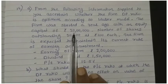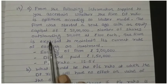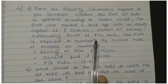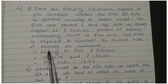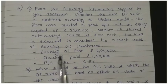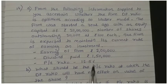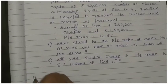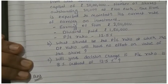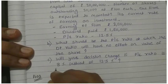From the following information supplied to you, ascertain whether the firm D/P ratio is optimal according to Walter model. You need to determine whether the firm D/P ratio is optimal or not. The firm was started a year ago with an equity capital of 20 lakhs, number of shares outstanding 20,000 at Rs. 100 each. The firm is expected to maintain its current rate of earning on investment. Earning of the firm is given 2 lakh and dividend paid is worth 1 lakh 50,000 and the P/E ratio is 12.5%.